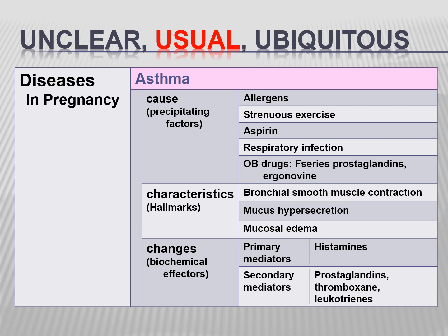Asthma is another common disease in pregnancy. Precipitating factors include the usual allergens, exercise, and respiratory infection. Some obstetric drugs can cause asthma. Characteristics include bronchial smooth muscle contraction, mucus hypersecretion, and mucosal edema. Primary mediators are histamines; secondary mediators include prostaglandins, thromboxane, and leukotrienes.